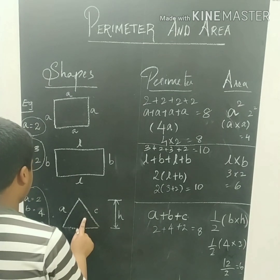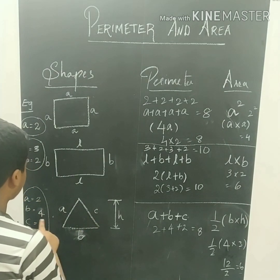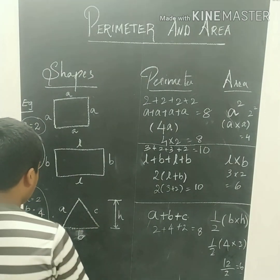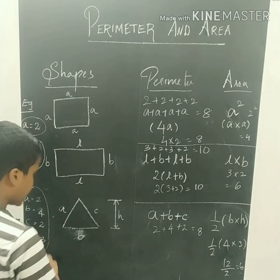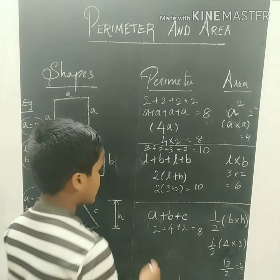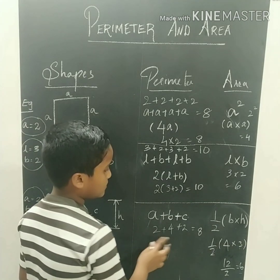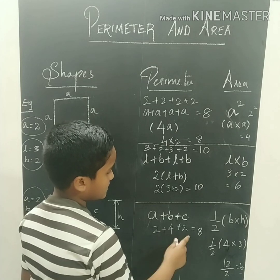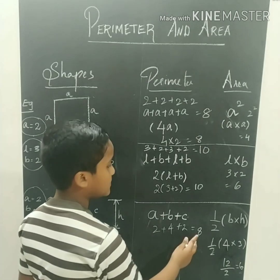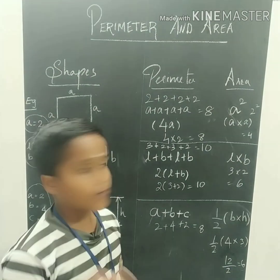Now, look at this triangle. A is equal to 2, B is equal to 4, C is equal to 2, and H is equal to 3. The perimeter is 2 plus 4 plus 2, which equals 8.